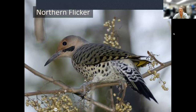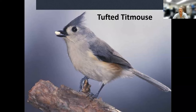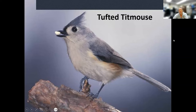Here's the tufted titmouse — super common at Burr Oak Woods, even more common than chickadees near the nature center. They love to come get bird seed. They're a little bigger than a chickadee and like to say 'peter peter peter.' The tufted titmouse is known for lots of different vocalizations — it can do a slow 'peter peter' or a fast 'peter peter peter' and scolding noises when you're too close.